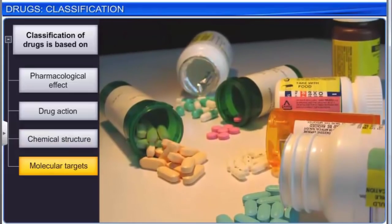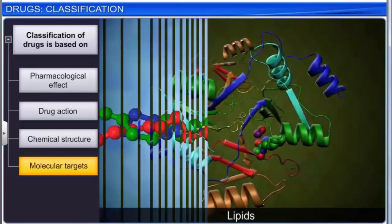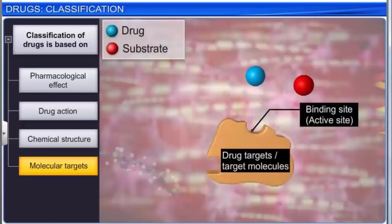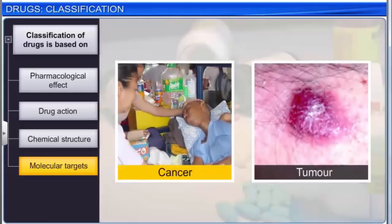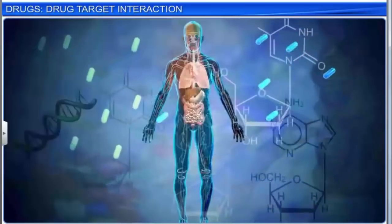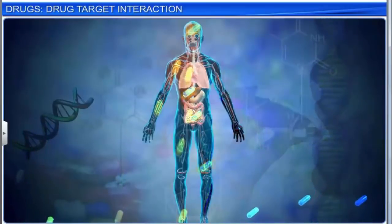Drugs usually interact with biomolecules like carbohydrates, lipids, proteins, and nucleic acids. These biomolecules are called drug targets, or simply target molecules. Drugs with similar structures have similar mechanisms of action on biomolecular targets. Drugs classified as per their molecular targets are especially used in the treatment of major ailments such as cancer and tumors. Have you ever wondered why the action of a drug is so specific? How can a drug be targeted at one specific biochemical function within the body?